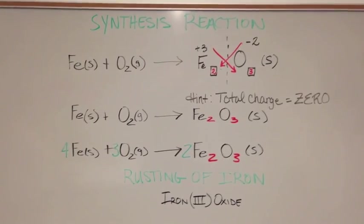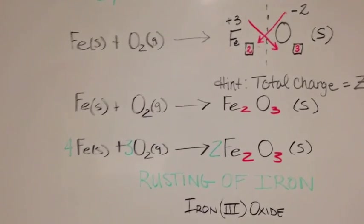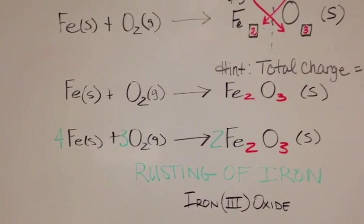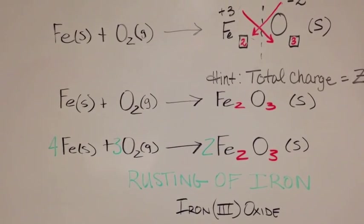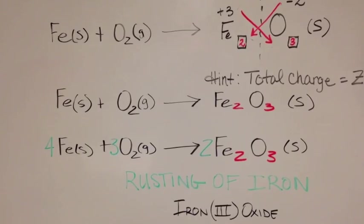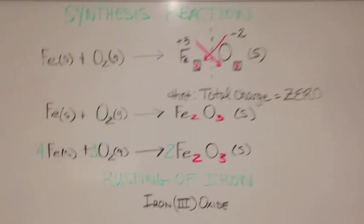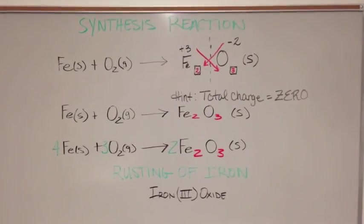Back on the reactant side, we're going to put a 3 in front of the O₂, giving us 6 oxygens. And we're going to put a 4 in front of the Fe, giving us 4 irons. Now the equation is balanced.